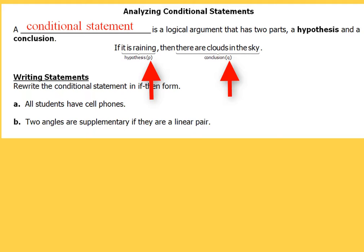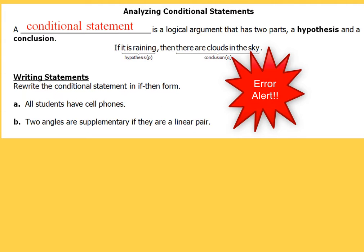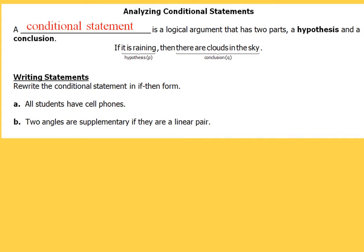Now, small little detail here, but we do want to pay attention to these details. Neither one of these, whether it's a hypothesis or a conclusion, do not include the word 'if' or the word 'then.' So don't be writing that when we talk about the hypothesis or the conclusion. You're only going to write the part that is after each one of those words.